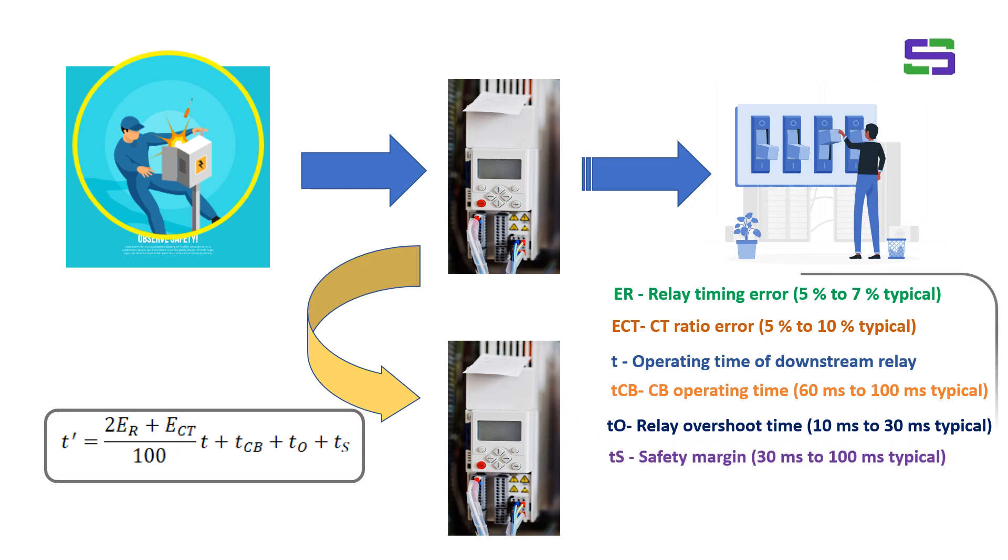Next is coming the TS, which is the safety margin. This is typically 30 millisecond to 100 millisecond.